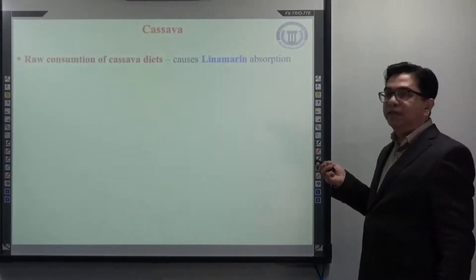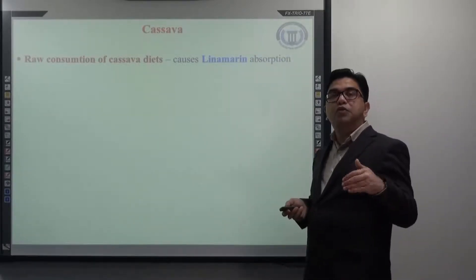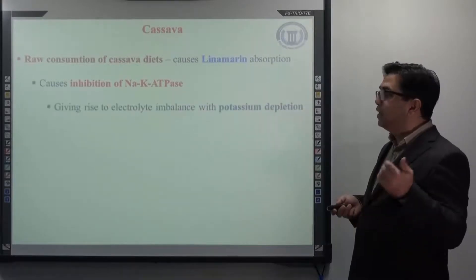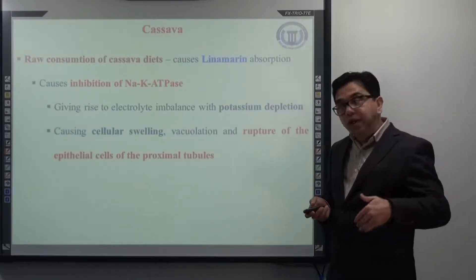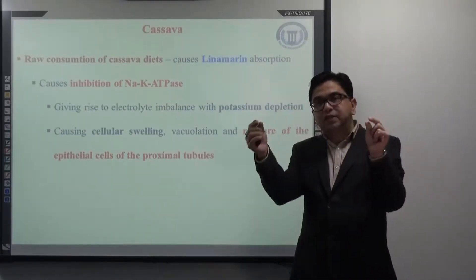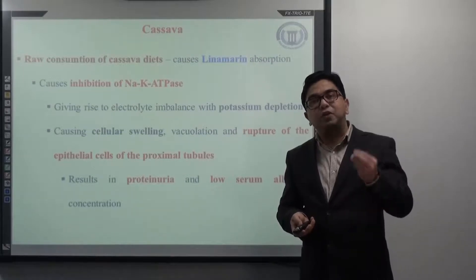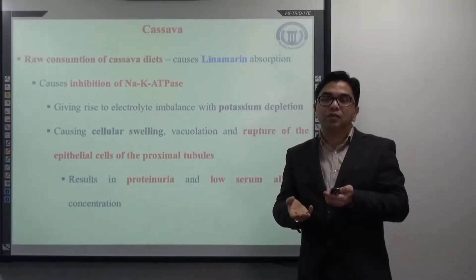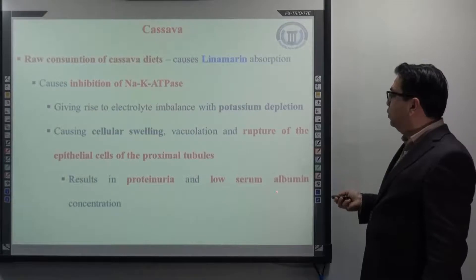Raw consumption of cassava can cause absorption of linamarin, one of the most dangerous cyanogenic glycosides, which can cause inhibition of sodium-potassium ATPase, giving rise to electrolyte imbalance with potassium depletion. It can also cause cellular swelling, vacuolation, and most importantly, rupture of epithelial cells of the nephron of the kidney, which further results in proteinuria — that is, loss of protein — because the proximal tubule is unable to filter and retain protein in the blood. Patients also suffer from low serum albumin concentration.